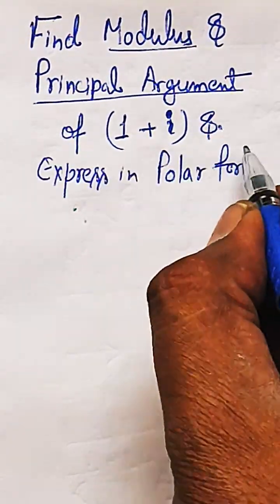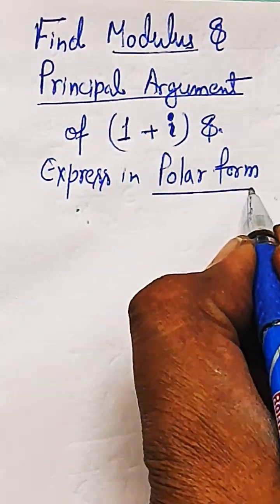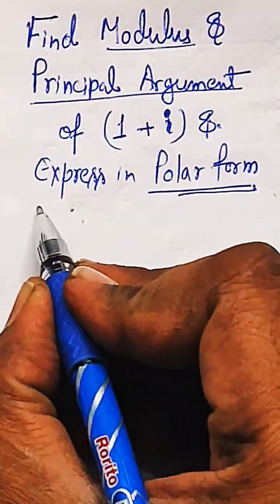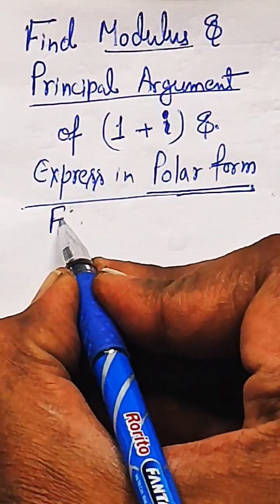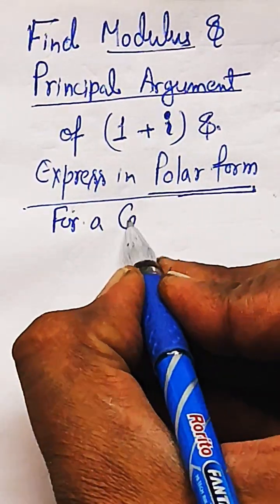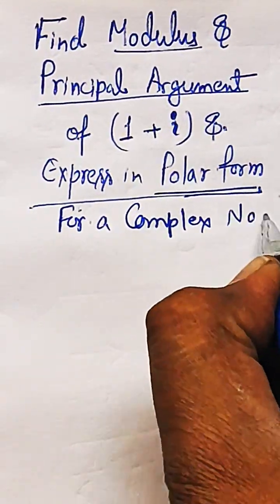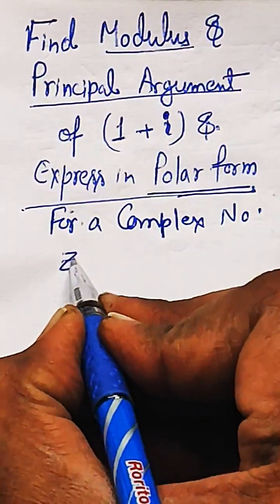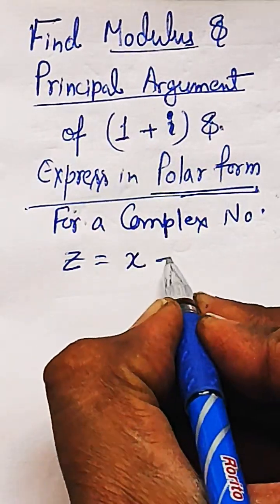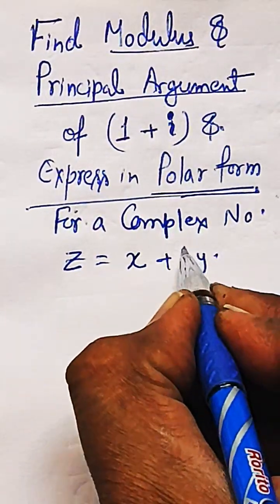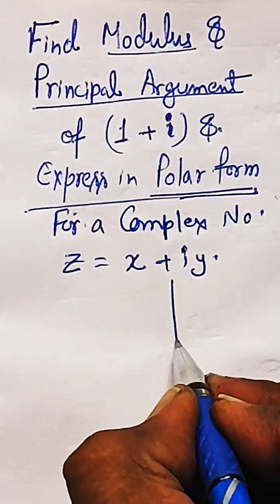This is the question to us. So let us recall for any complex number whose format will be represented as z equal to x plus i y. Let us assume the complex number z as equal to x plus i y, which is the universal format.